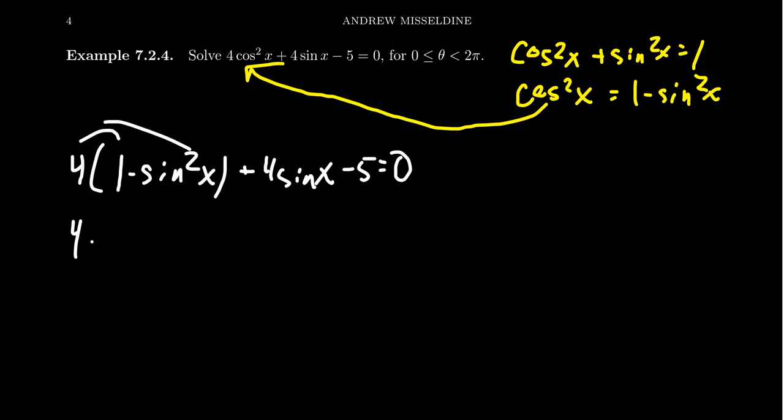Distribute the 4: we get 4 - 4sin²x + 4sinx - 5 = 0. Combining like terms, you end up with -4sin²x + 4sinx - 1 = 0.